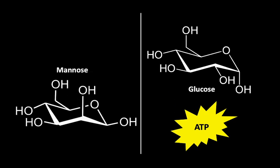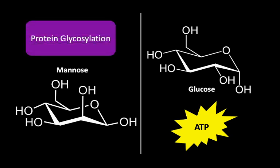Mannose, on the other hand, is a simple sugar as well, and it is derived from glucose. It's a carbon-2 epimer of glucose. Mannose is important for protein glycosylation in our body. Protein glycosylation is the addition of sugars onto proteins, and the purpose of this is to hydrate these proteins and to protect them from protein degradation.